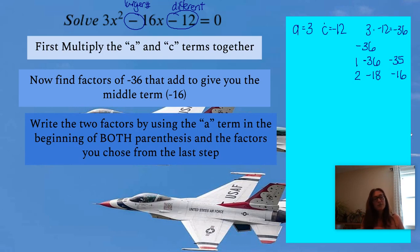So then our next step is going to be to write the two factors by using the a term in the beginning of both of the parentheses, and then the factors that we chose from the last step. So this is going to seem like this is a little crazy. We know that there can't be a 3x in both of these parentheses. So just bear with me to start with.